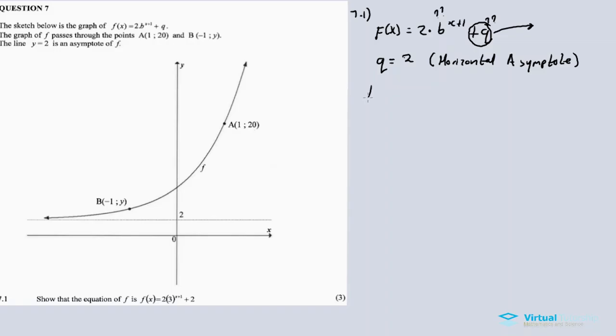So f(x) equals 2 times b raised to exponent x plus 1 plus 2. Now it's time to find the value of b. In order to find the value of b, I'm going to use the coordinate A. Where y or f(x) equals 20, we substitute into this equation and calculate b. So where does x equal 1 for coordinate A, plus 1, plus 2.